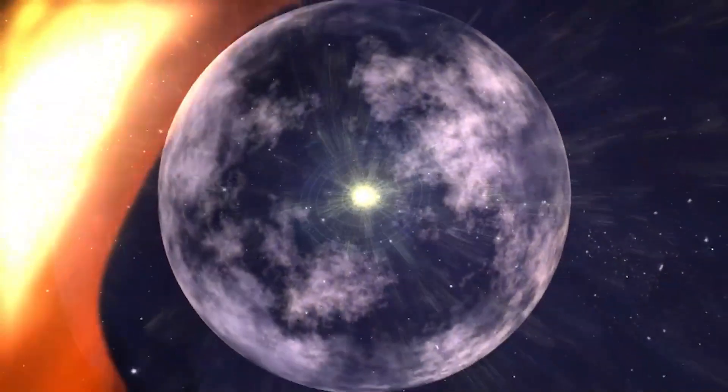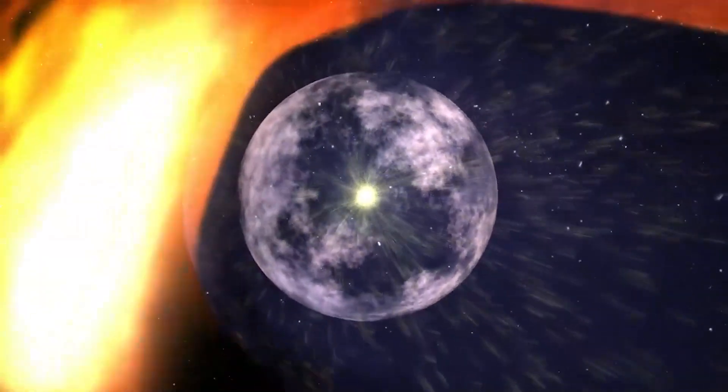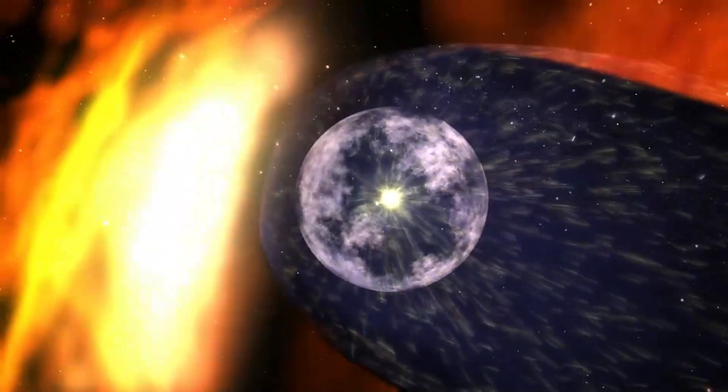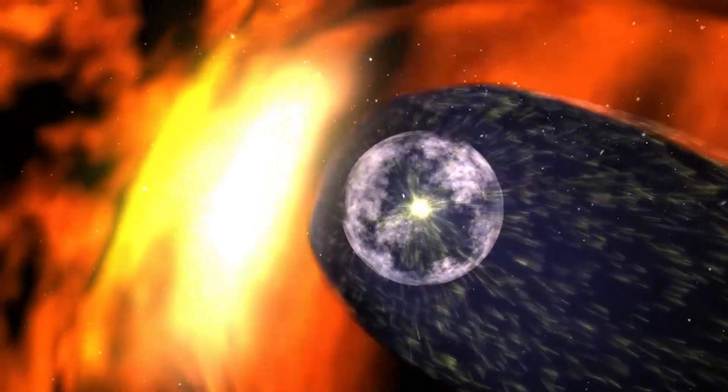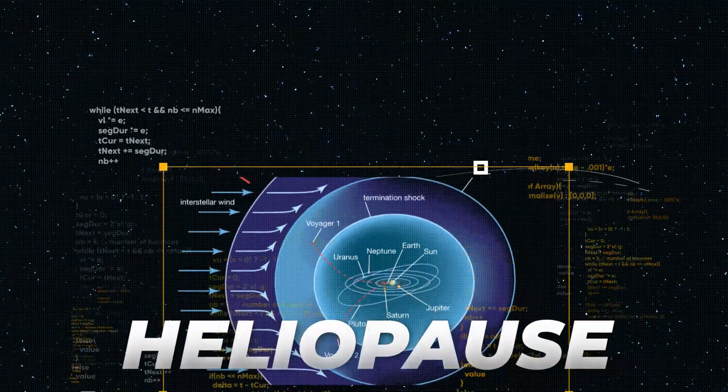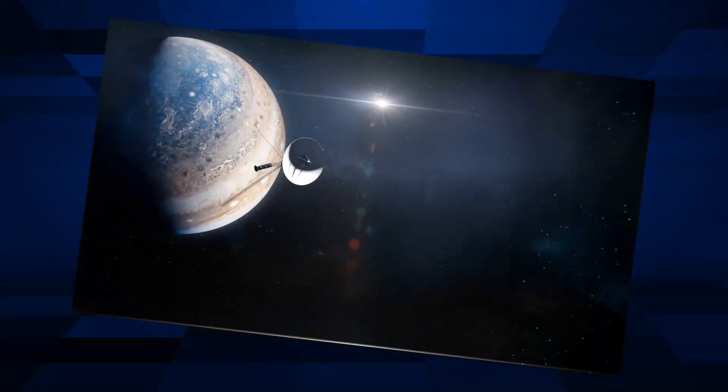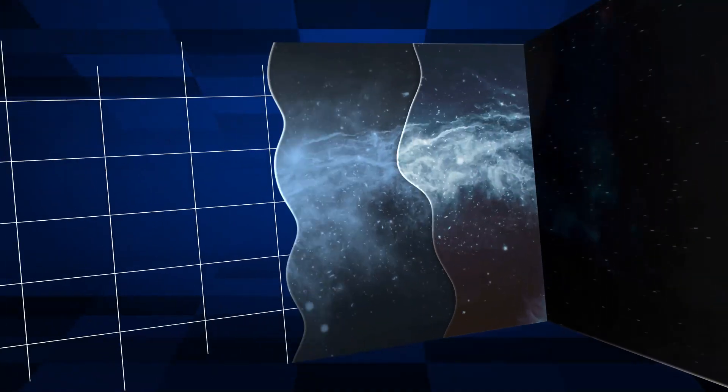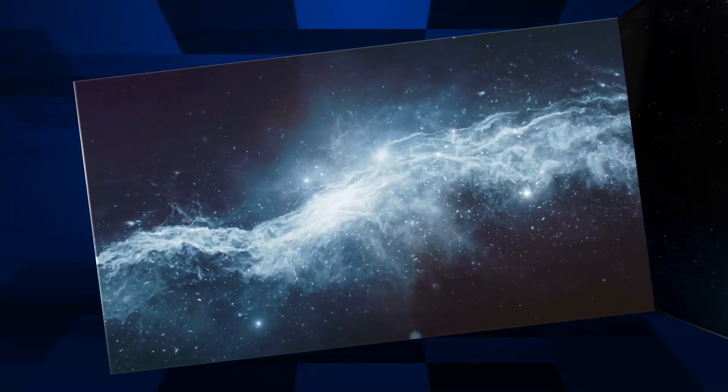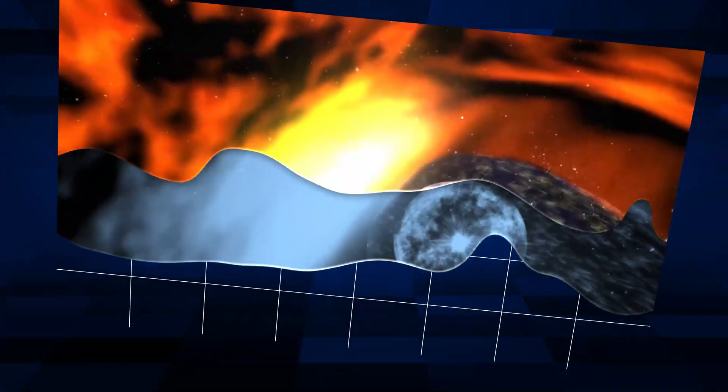The heliosphere is shaped by the Sun's solar wind and interstellar conditions. The boundary where our solar system meets interstellar space is called the heliopause. Voyager data has given scientists new insights into this boundary, showing that cosmic rays are about three times stronger outside the heliopause than inside the heliosphere.